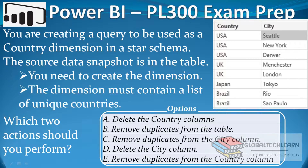The requirements are: you need to create the dimension, and the dimension must contain a list of unique countries. Which two actions should you perform? The options are: delete the country column, remove duplicates from the table, remove duplicates from the city column, delete the city column, remove duplicates from the country column.